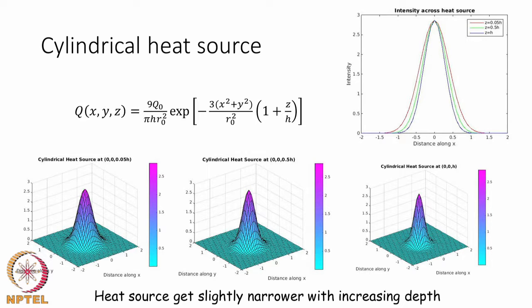We will look at heat sources that cover this kind of method. A cylindrical heat source is a very simple extension to the Gaussian heat source — the first part of the function in the exponential looks exactly like a Gaussian, and there is a multiplicative factor which depends upon the thickness. Z is the height from the sample surface and H is the thickness of the entire vapor column.